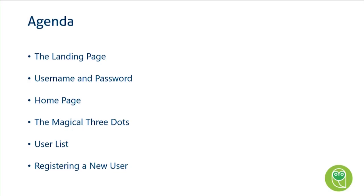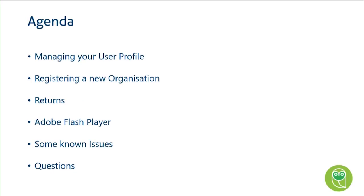I'm going to go through the agenda quickly. First, I'll cover the landing page, username and password, the home page, and the magical three dots — I say magical because when I found this it changed my life and finally made sense of the new e-filing site. Then I'll show you the user list, registering a new user (important because everybody must have their own username and login), managing your user profile, registering a new organization, returns, and Adobe Flash Player. Then I'll go through some known issues and questions.